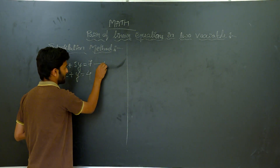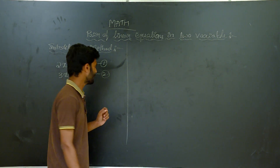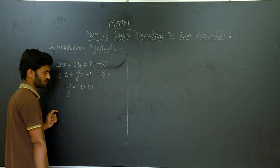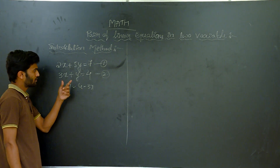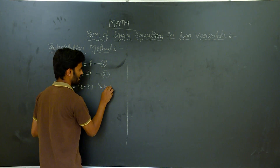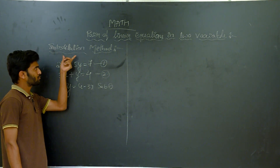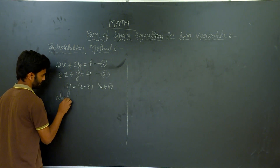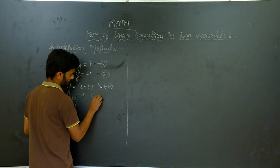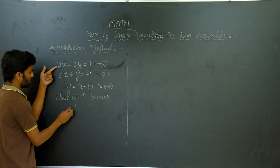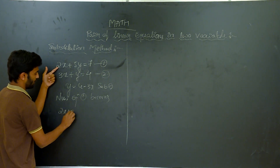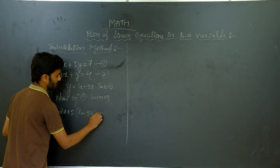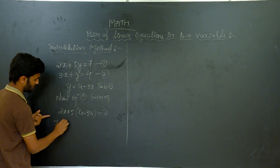I will label the equations as equation 1 and equation 2. From equation 2, I will take the value of Y, which becomes 4 minus 3X. Now I will substitute this value of Y into equation 1. So equation 1 becomes: 2X plus 5 into (4 minus 3X) which is equal to 7.